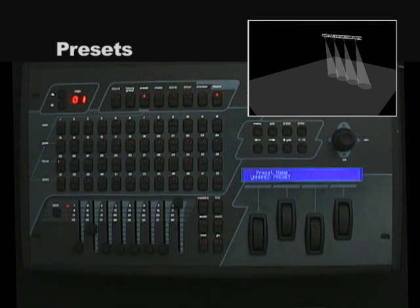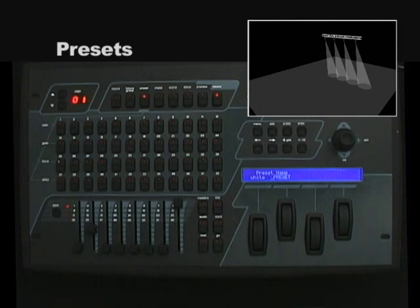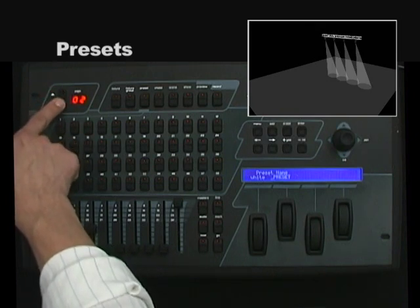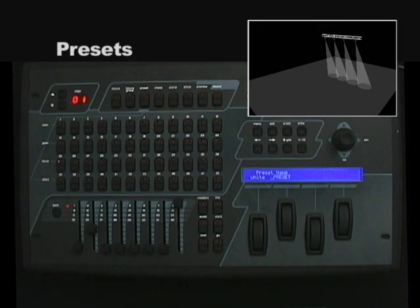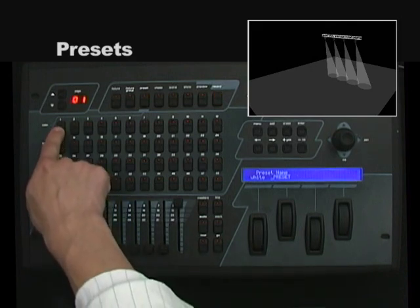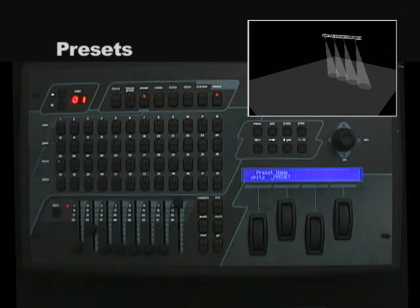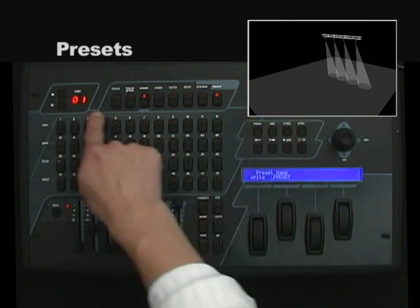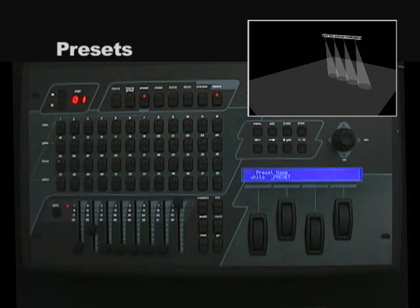I have connected an external keyboard to the rear input of the Show Designer 2 so I can name my presets. I will name this one 'white preset.' Once you have named it, you can use the up and down page buttons to select between the 24 pages. Once you have selected the page, you can store it to the first available button. Being that we are recording color presets, we would want to record all color presets on the top row of buttons. I will store that to button number 1. I will now adjust the color channel only to the next color.